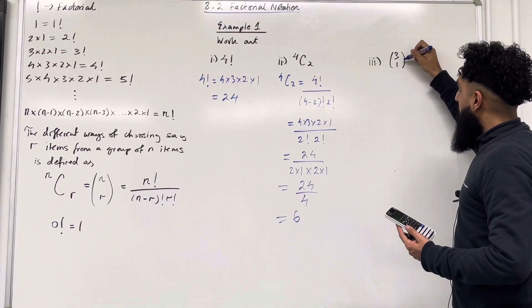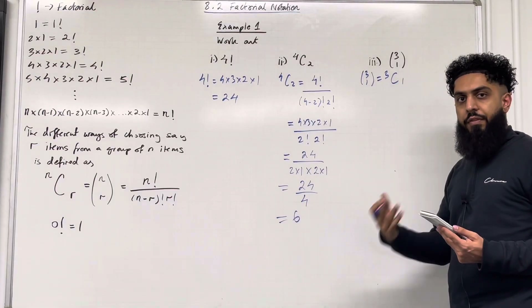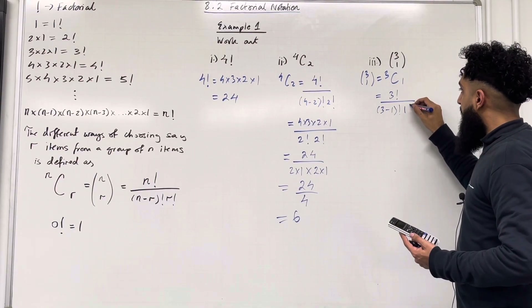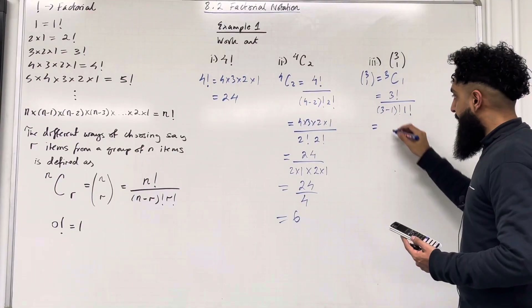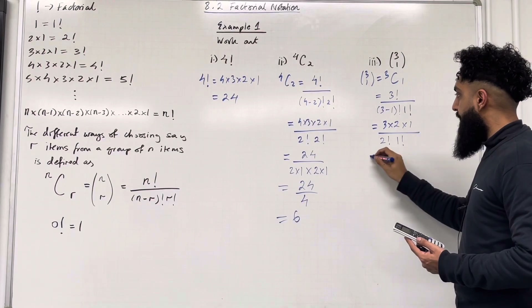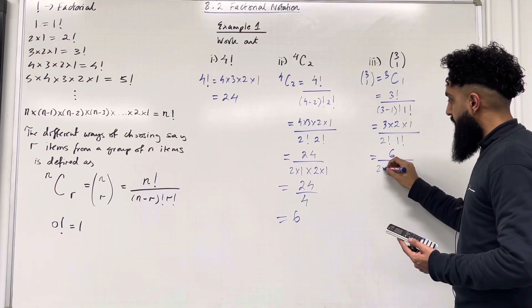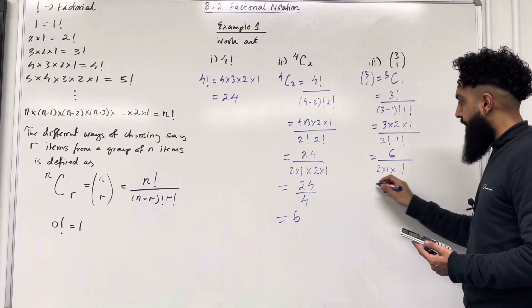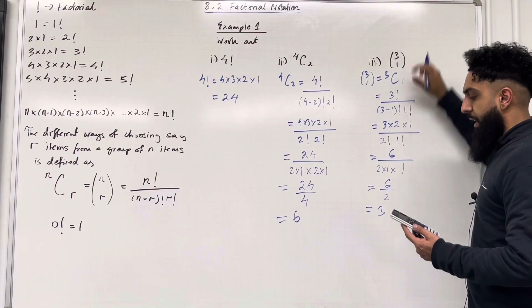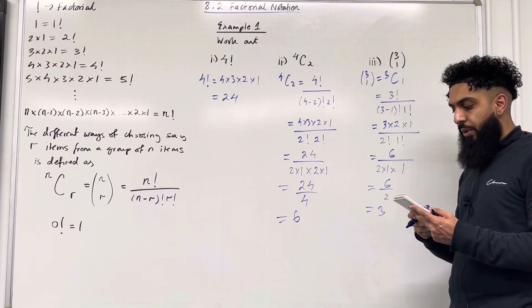Part 3: we want to calculate (3,1) in brackets, which is the same as 3 choose 1. By definition, 3 choose 1 is 3 factorial over (3 minus 1) factorial times 1 factorial. The numerator is 3 times 2 times 1, and 3 minus 1 is 2, so the denominator is 2 factorial times 1 factorial. The numerator becomes 6; 2 factorial is 2 times 1, multiplied by 1 factorial which is 1. So we have 6 over 2, which is 3. You can calculate this from the calculator: type in 3, press shift and divide for C, then type in 1, press equal and get 3.